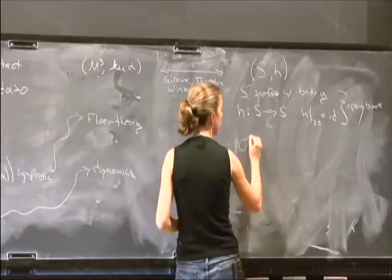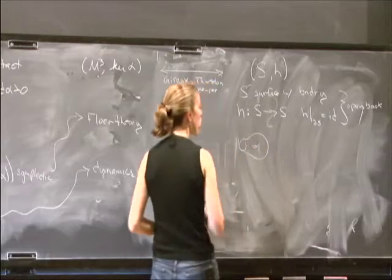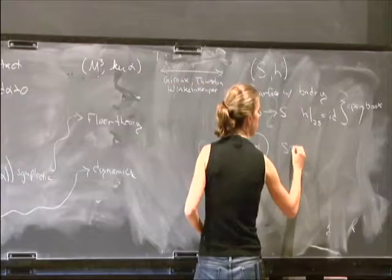You have your surface with boundary. So say you have a punctured torus. And you cross the surface with the interval.